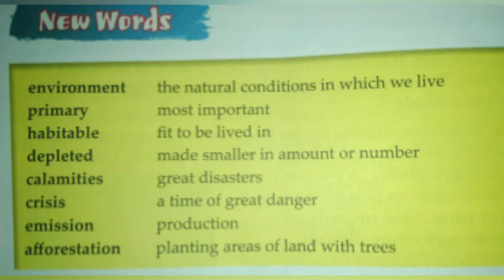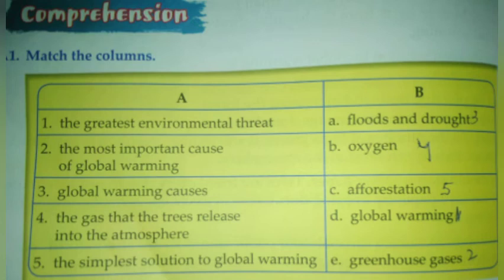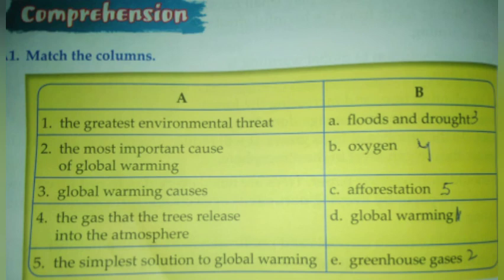Comprehension — Match the column: A) The greatest environment threat — D) Global warming. B) The most important cause of global warming — E) Greenhouse gases. C) Global warming causes — A) Floods and drought. D) The gas that trees release into the atmosphere — B) Oxygen. E) The simplest solution to global warming — C) Afforestation. Planting more trees releases more oxygen and reduces global warming.